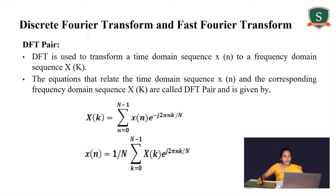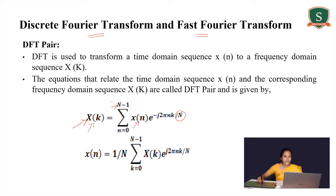That transformation can be done through the Fourier transform. There are two types: the Discrete Fourier Transform and the Fast Fourier Transform. The DFT expression is X(k) = Σ (n=0 to N−1) x(n) · e^(−j2πnk/N), where N is the number of samples, x(n) is the discrete time sequence, and X(k) is the frequency domain sequence. x(n) and X(k) are known as a DFT pair.